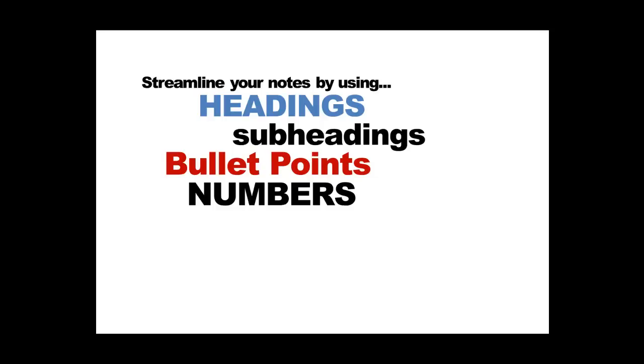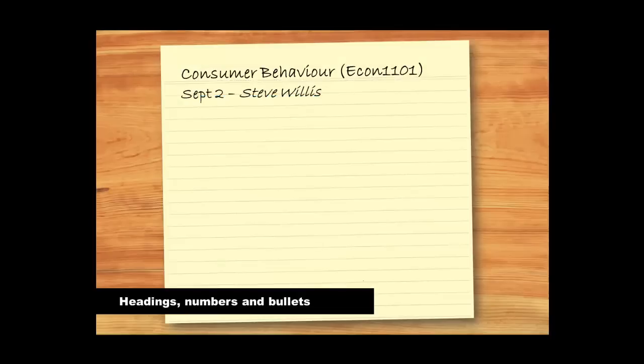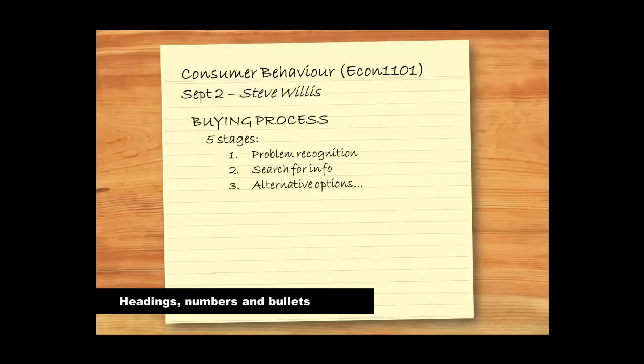One way to do this is to listen out for clues from your lecturer in the way they signpost information. Some lecturers will outline the main topics they're going to cover in their lecture at the start. For example, they may say, today I'm going to talk about A, B, and C, and from this you'll be able to anticipate what the major topic headings will be. Or you might hear them say, there are three points to consider, the first is X, the second is Y and so on. And then this can be reflected in your notes, as a numbered list.